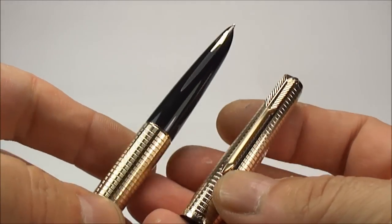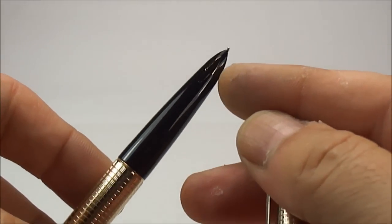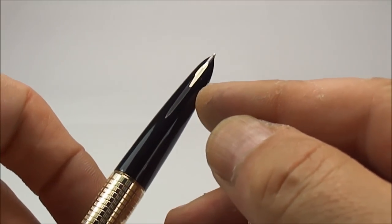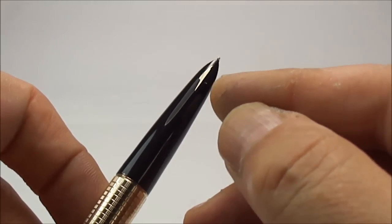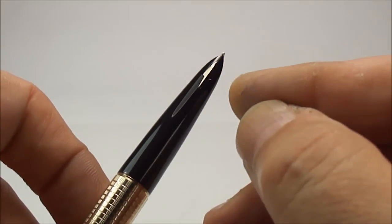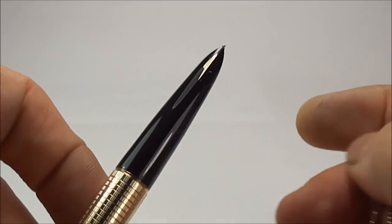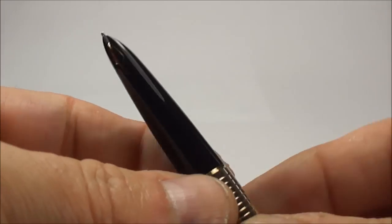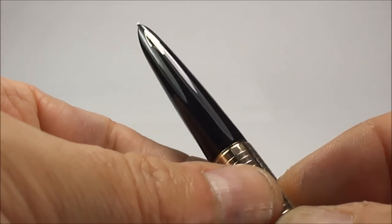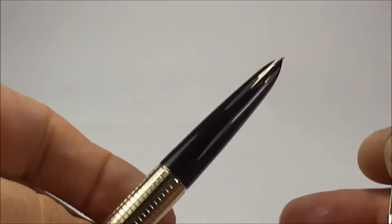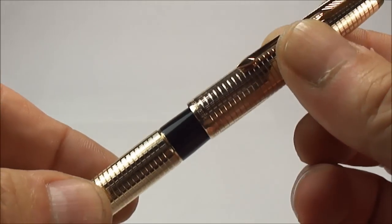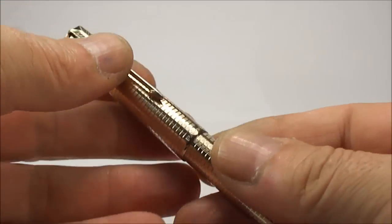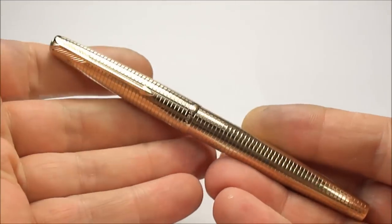Just another point while I'm showing you the pen, when we took the nib just to give it a clean, the imprint on the nib reads 585, 14 carat Parker England. So it's an original 14 carat nib. Let's slide the cap back on and it goes on as it should do, lovely and tight.